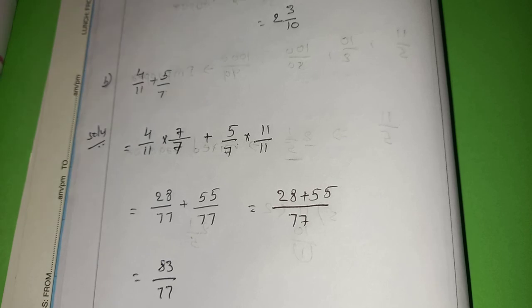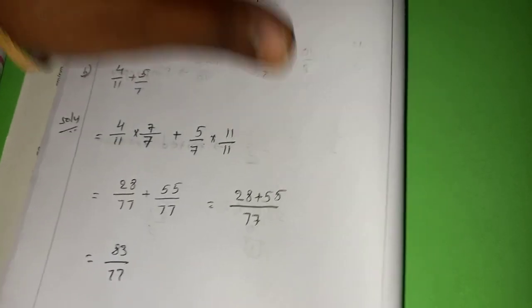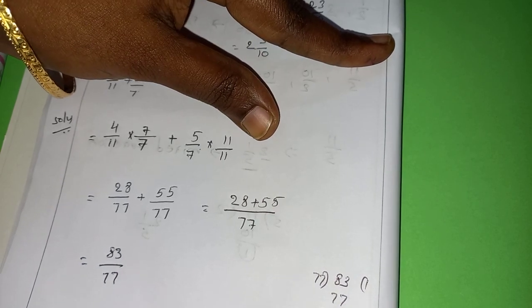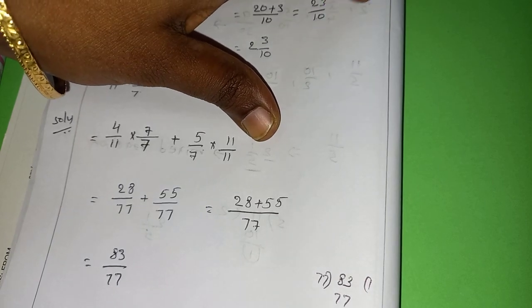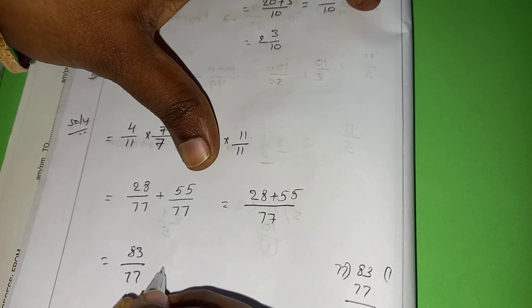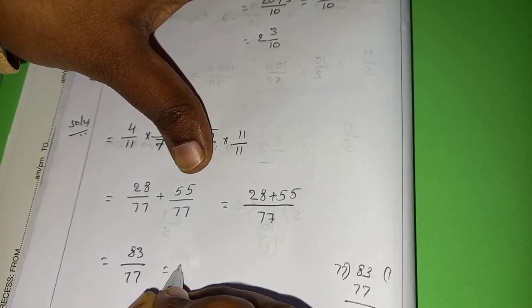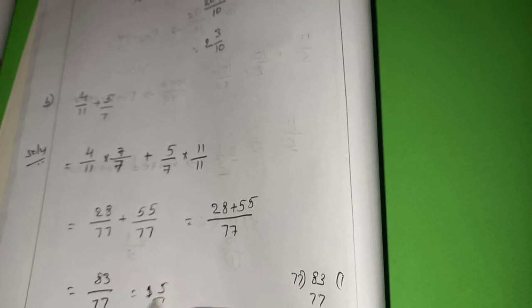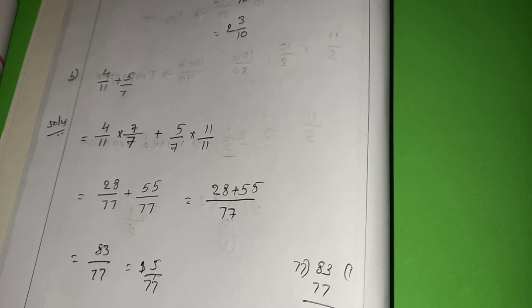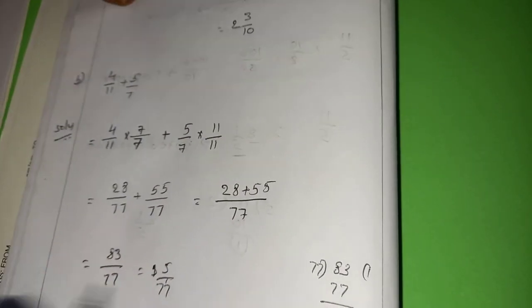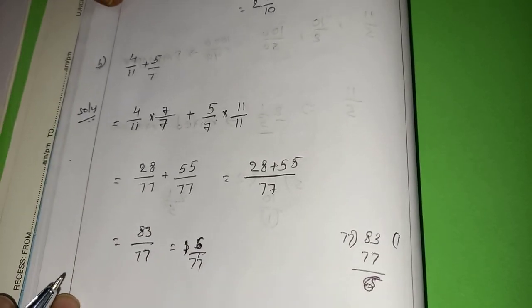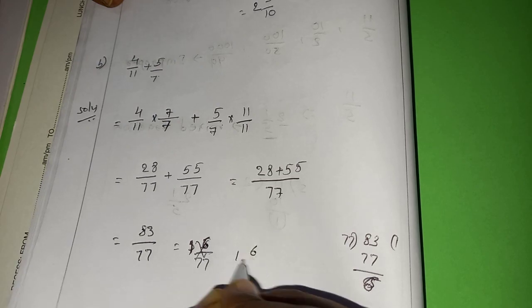83 by 77 is an improper fraction. Let us convert it to a mixed fraction. 77 goes into 83 once with remainder 6. So the answer is 1 and 6 by 77.